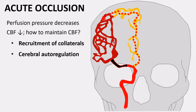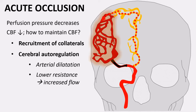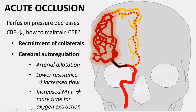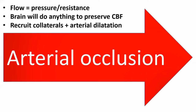There is a second mechanism: cerebral autoregulation. Flow equals perfusion divided by resistance, so when pressure decreases, the brain can also decrease resistance. It does that by arterial dilation — by dilating the arteries, resistance decreases and flow increases. However, because the caliber of the vessels has increased, blood also needs more time to pass through them, so we have an increased mean transit time. This also means there is more time for brain parenchyma to extract oxygen, because blood stays longer in the microvascular bed.